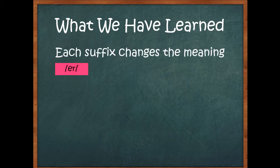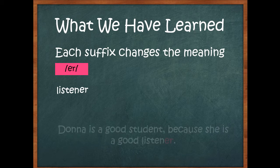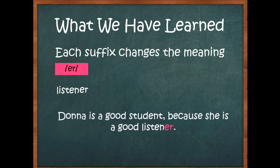We also learned the very important ER. So we can take a word like listen and make listener. A listener is a person who listens. A teacher is a person who teaches. A reader is a person who reads. So ER tells us what someone does. Donna is a good student because she is a good listener. This is a little tricky because AR and IR and UR also make the ER sound, but when we're talking about someone who does something, usually it's ER.